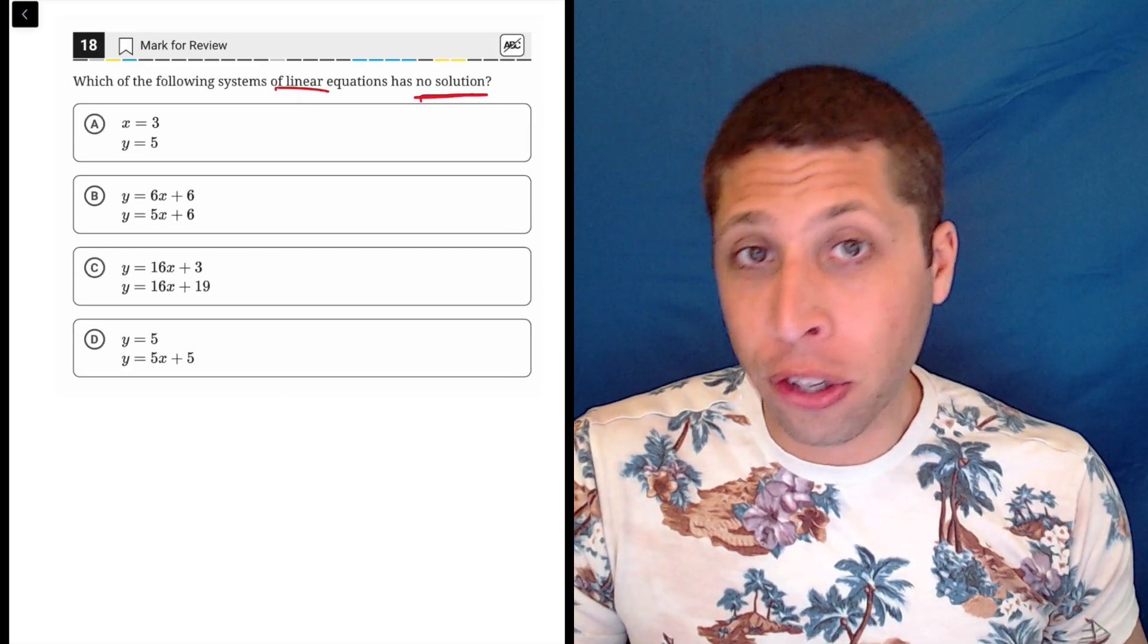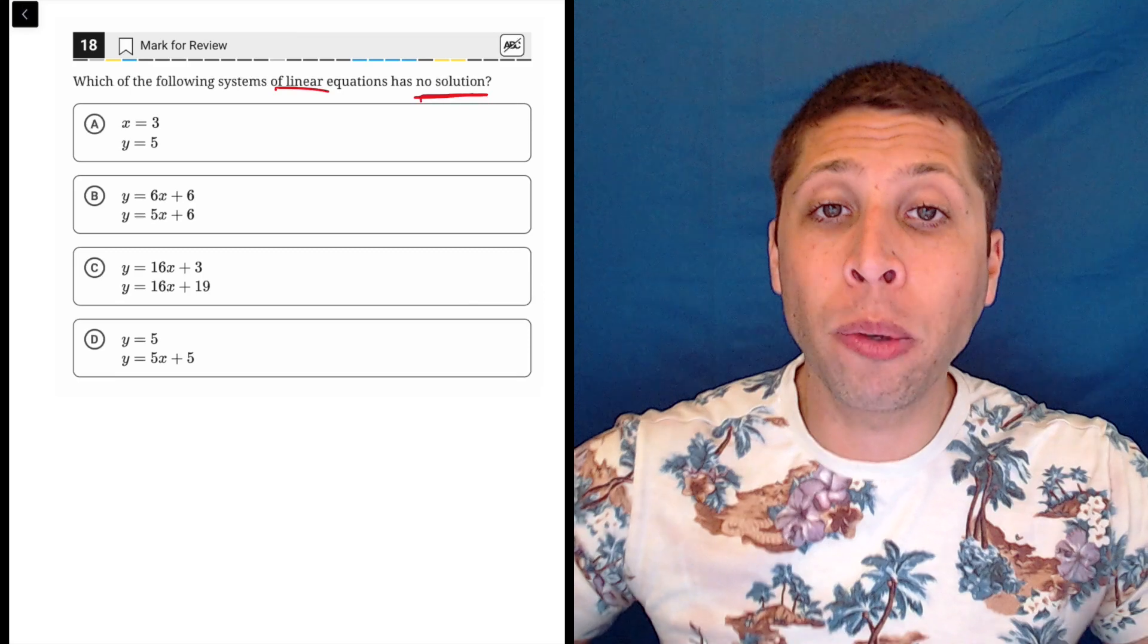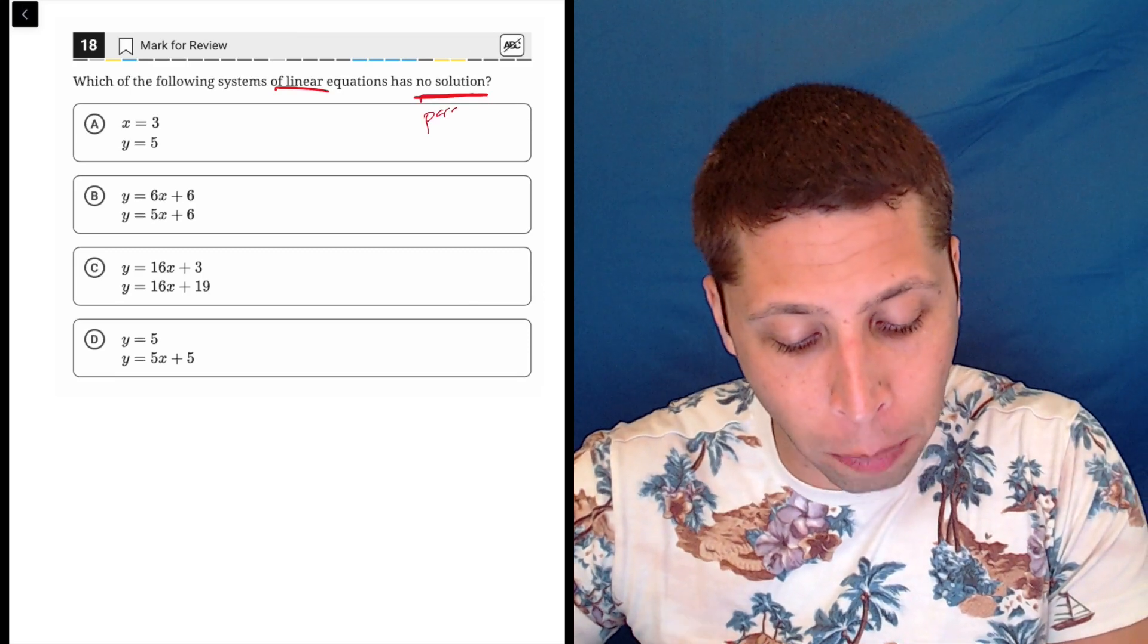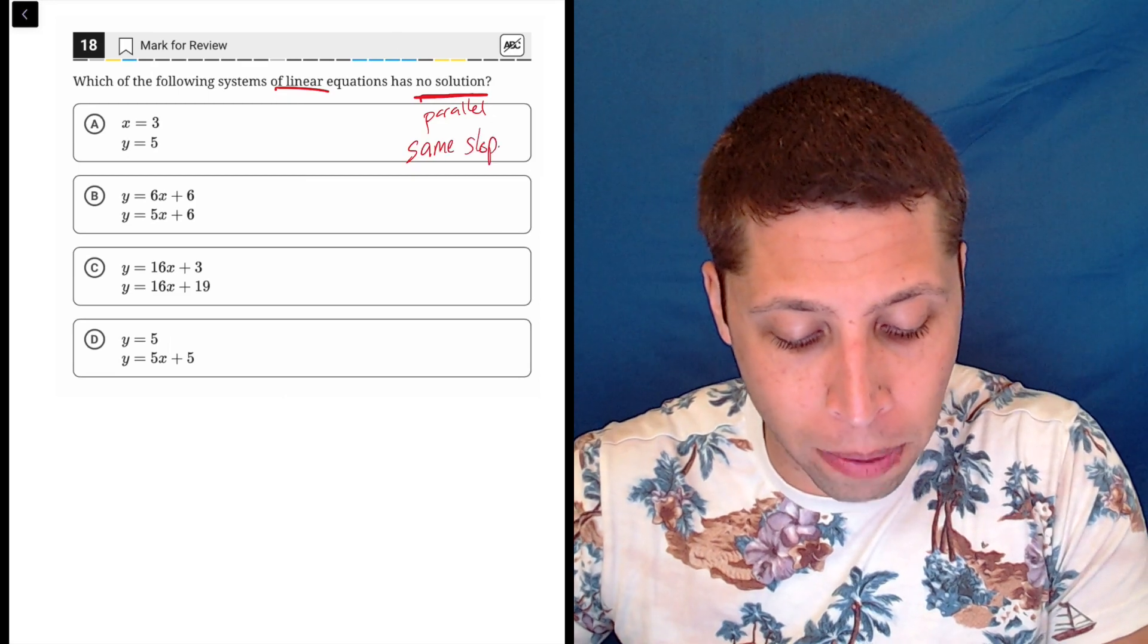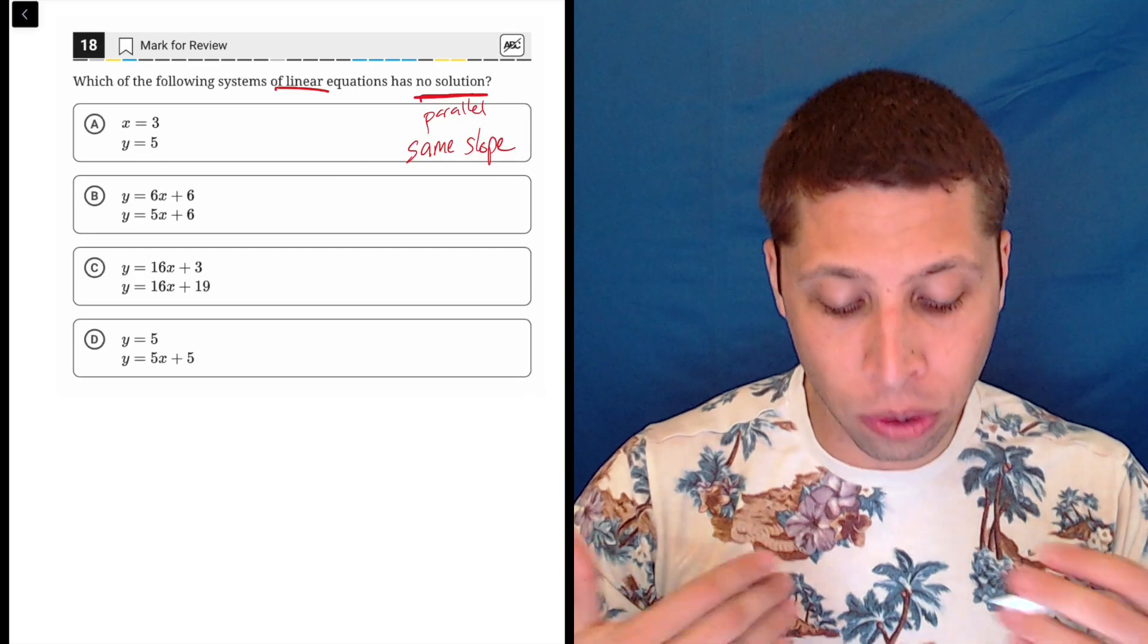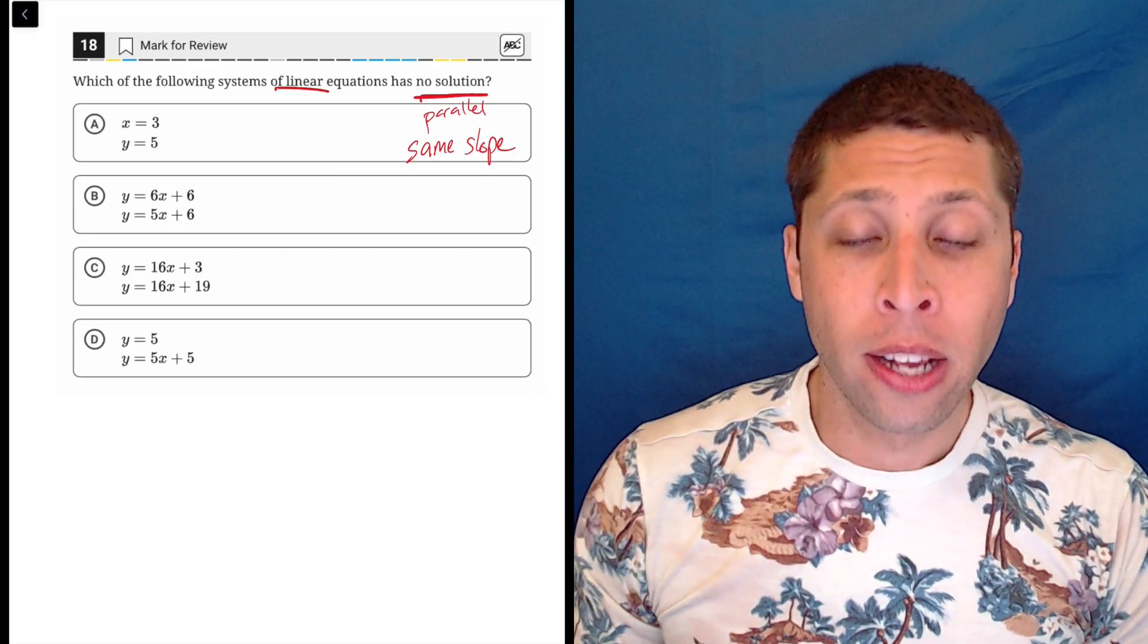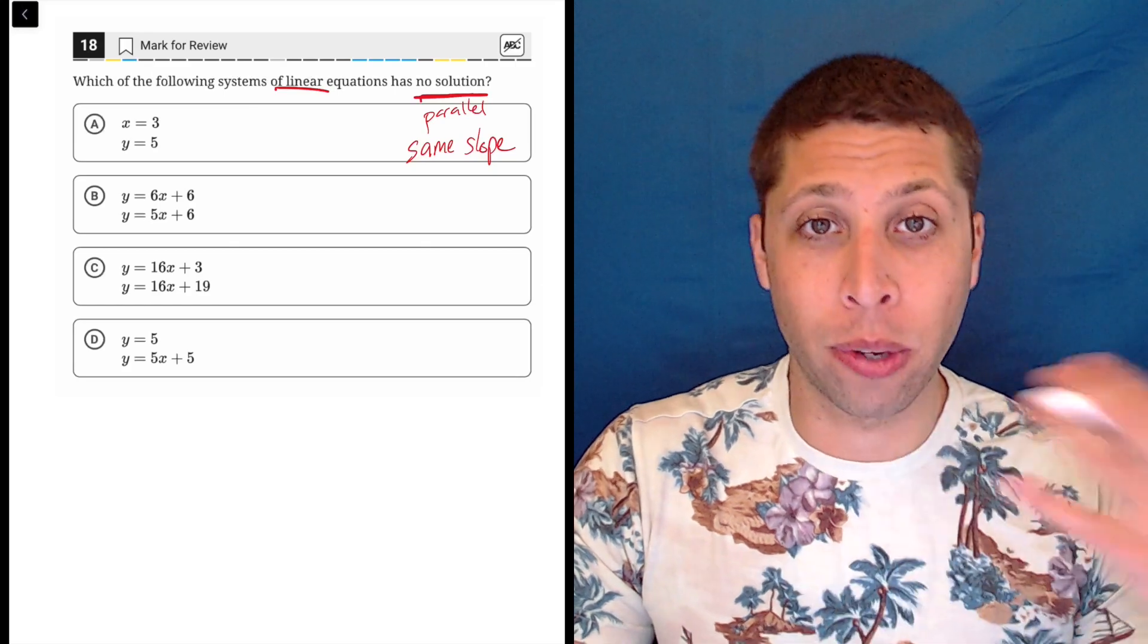We need to know why would two lines have no intersections. That only happens when they're parallel, and lines are parallel when they have the same slope. Luckily, all of these equations are written in y equals mx plus b format, so we know that the slope is represented by the m term.